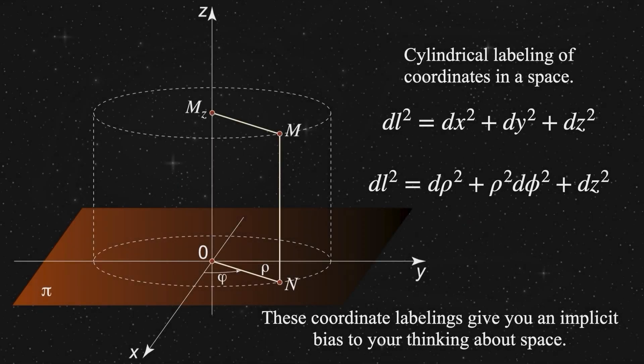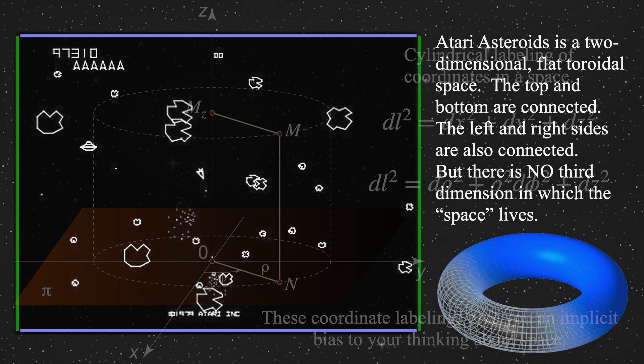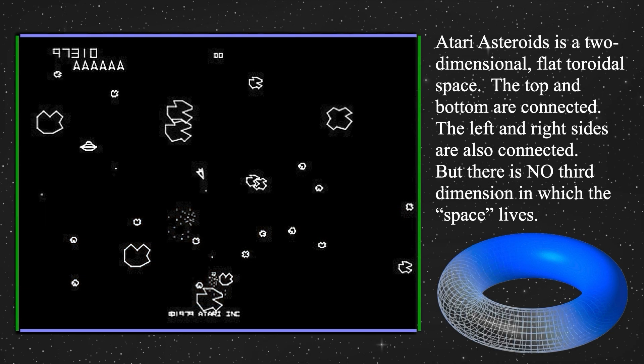Unfortunately for our common sense, there are an infinite number of spaces that are homogeneous and isotropic, and only exactly one of them abides by Euclid's axioms. To show what I mean, let's take this concept of a cylindrical coordinate system and play with it for a little bit. My goal now is to dislodge some of the biases you may have concerning the quote, obvious nature of space.